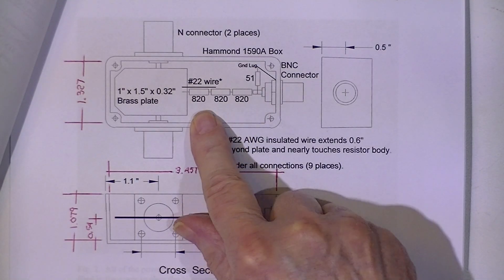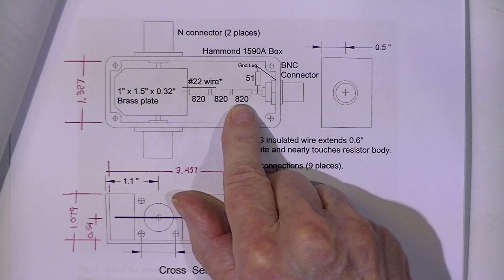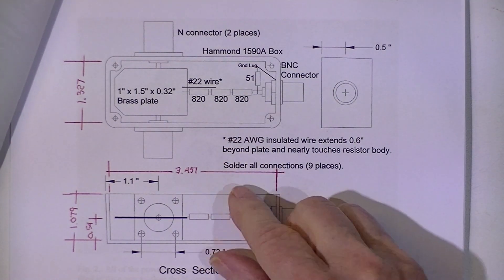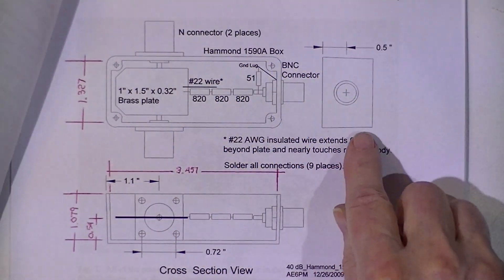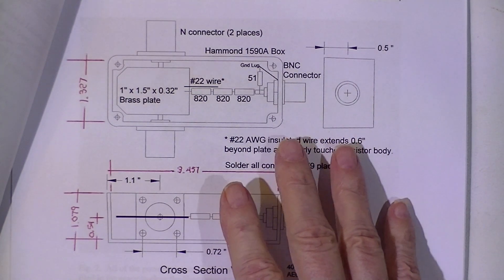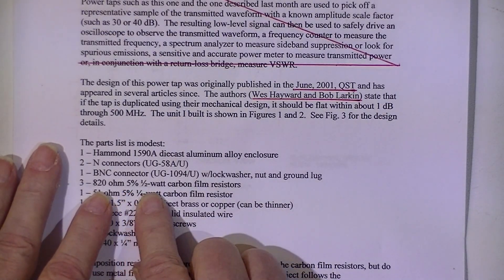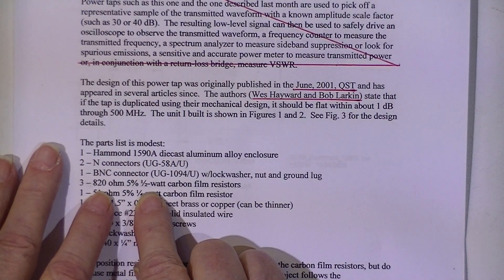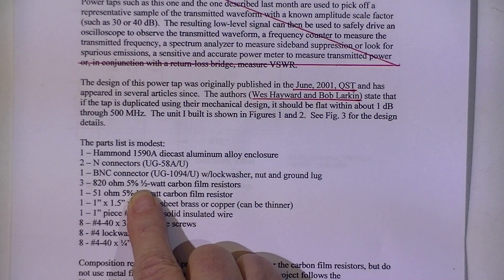The original design used three 820 ohm resistors in series. Now, this whole thing is enclosed in a metal box with no holes in it, so there's no ventilation. The original design used half watt resistors, and with three resistors there, the maximum dissipation would be one and a half watts.